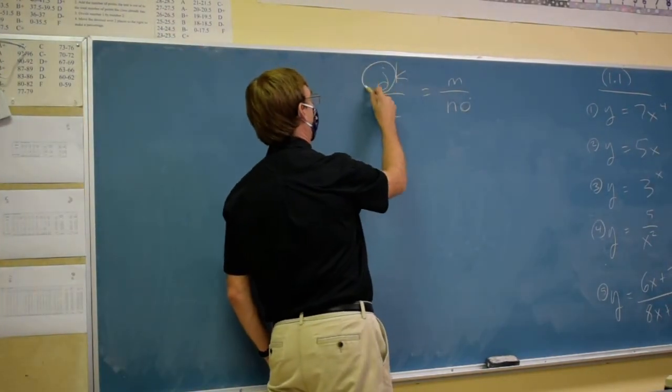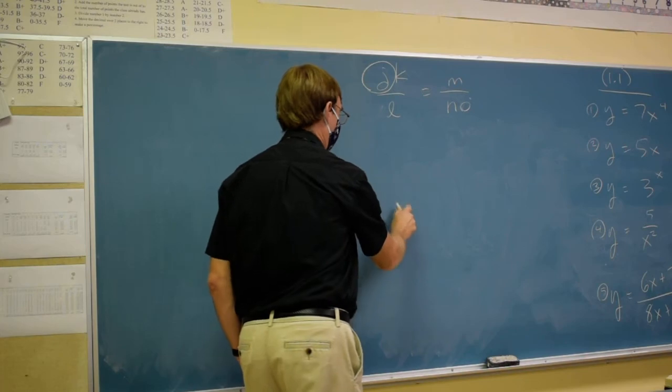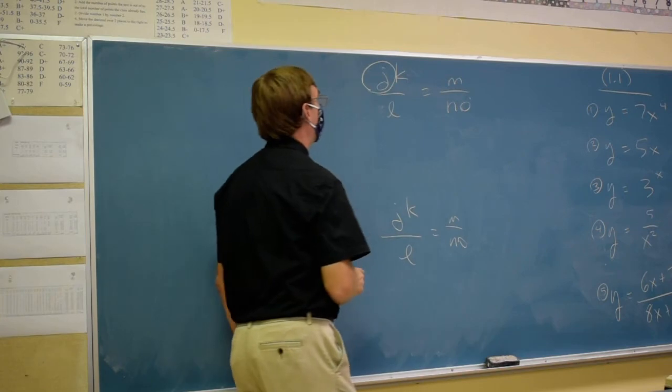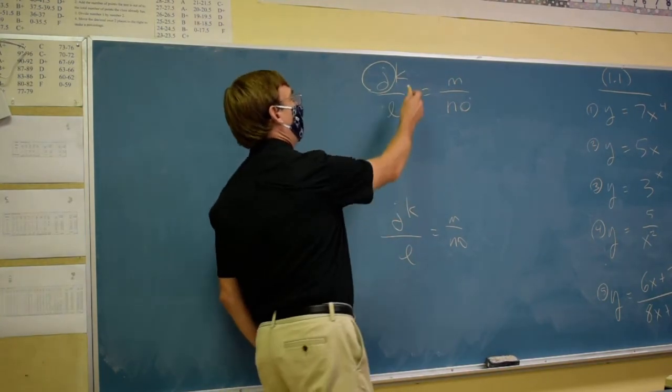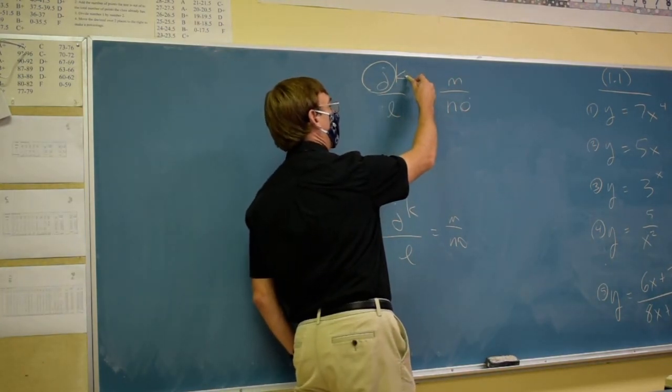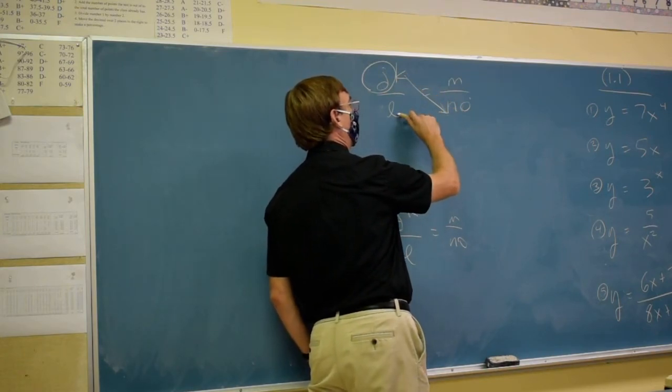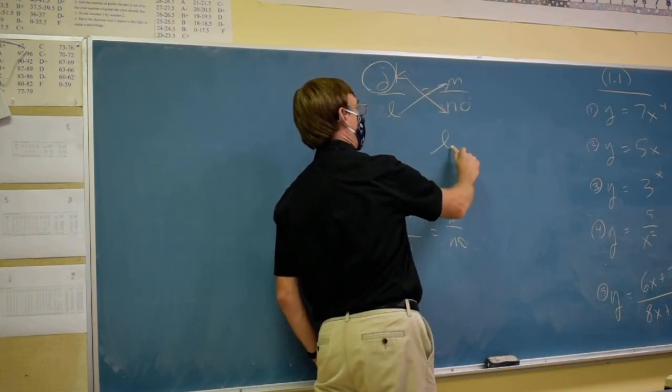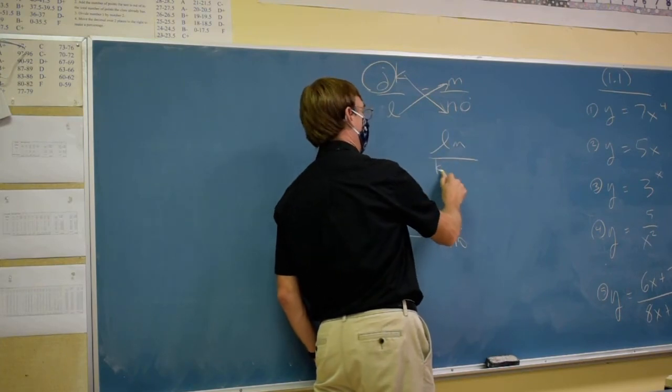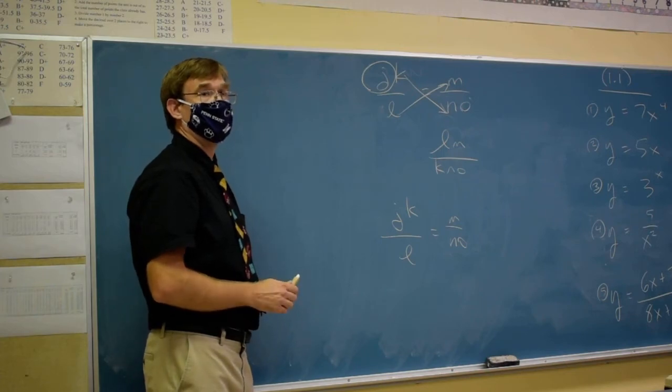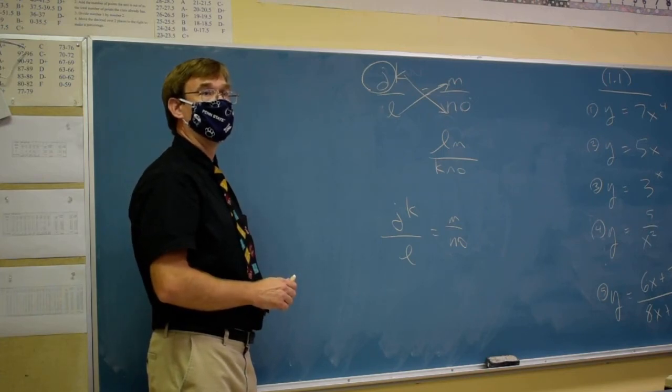So if I want to get the J alone, I'd want the K to go to the bottom. I'd want the L to go to the top. So my answer is LM over KNO. Does that bother anybody? I have to do another one like that.